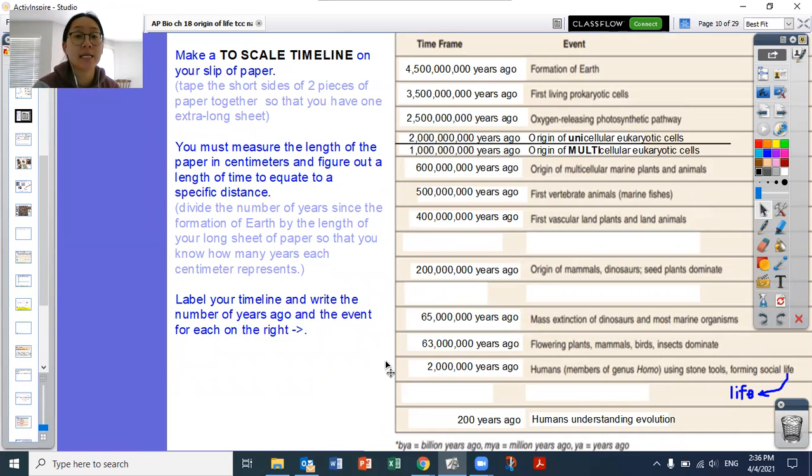And you want to measure how many centimeters from one end to the other end that sheet is so that you can divide the total number of years, which would be 4.5 billion years ago. That way you can properly space out when these events are happening based on how many centimeters you have and how many years ago they happened.